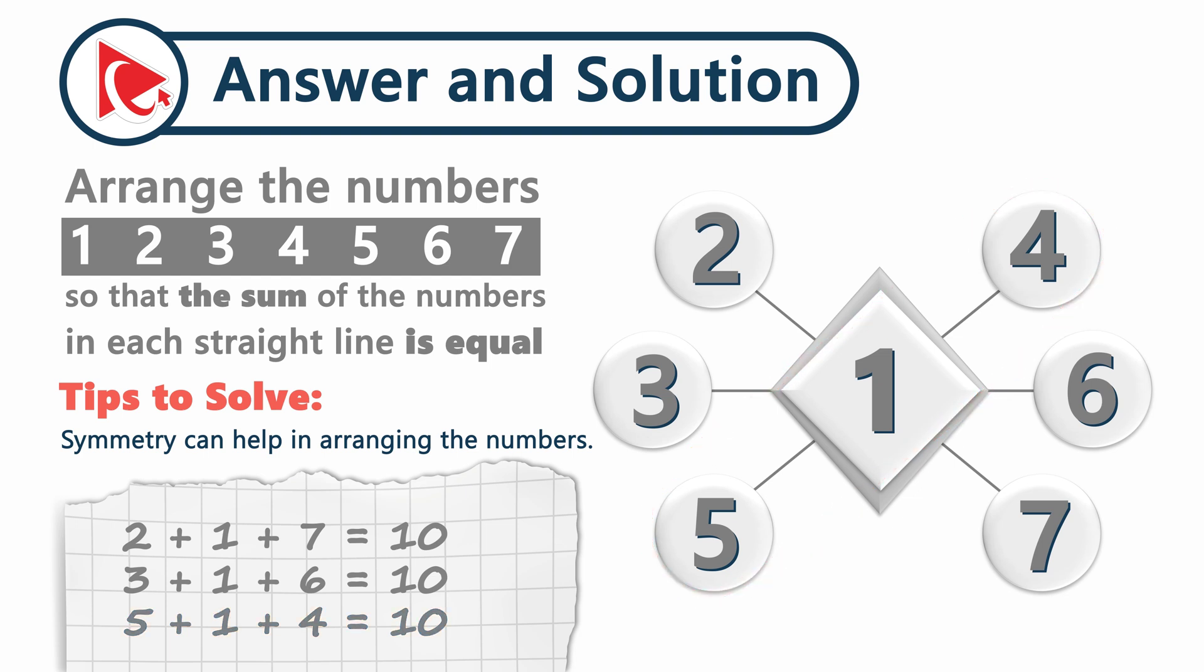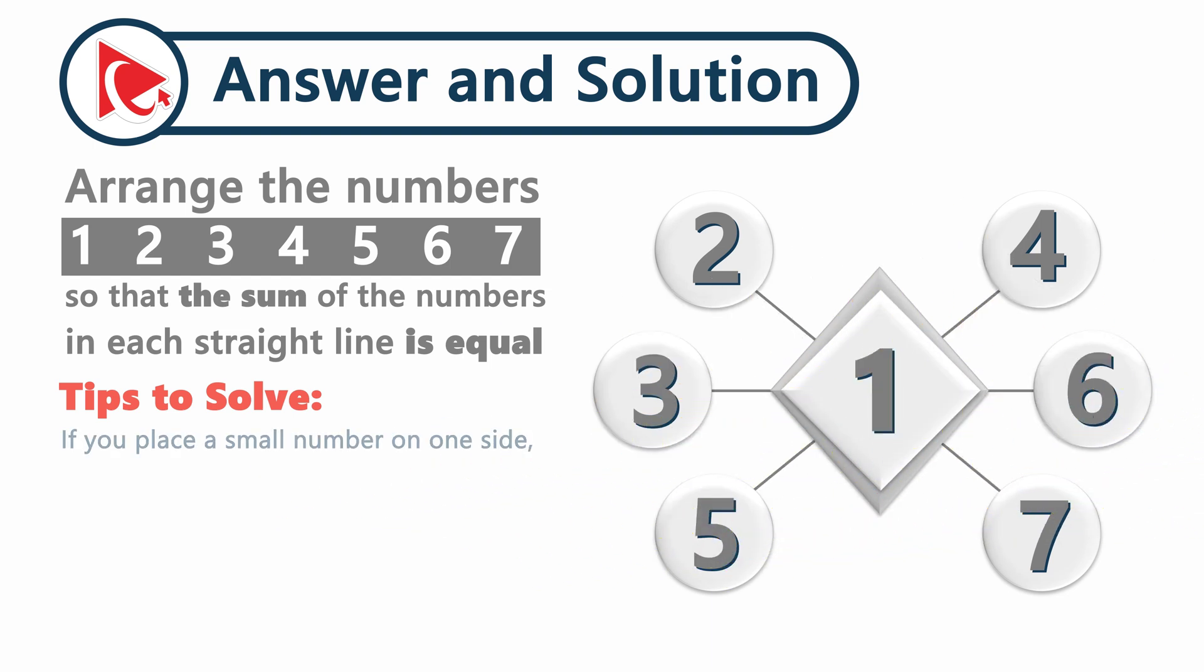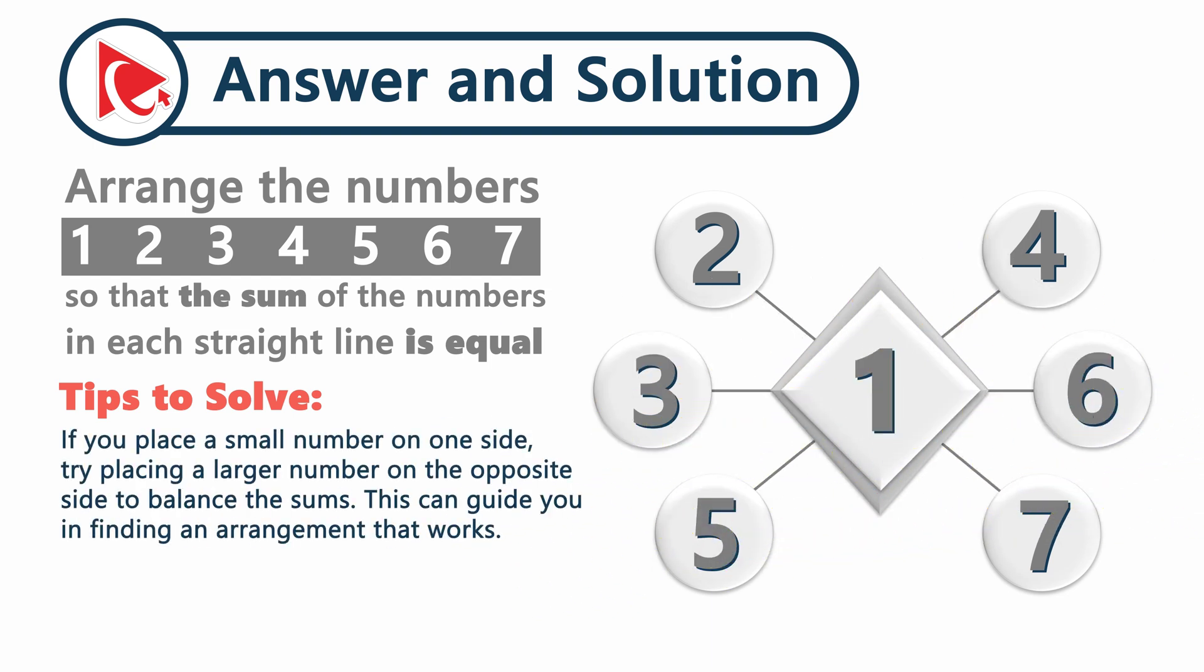I hope your answer also was correct. But if you haven't solved it, let me give you another tip so you can solve it in the future. If you place a small number on one side, try placing a larger number on the opposite side to balance the sums. This will help guide you in finding an arrangement that works.